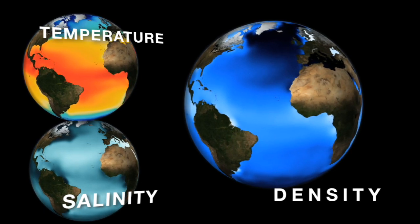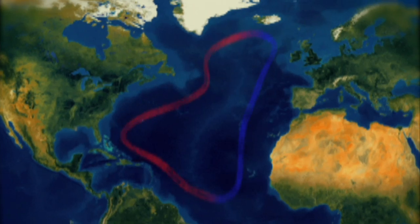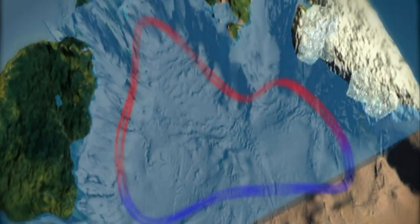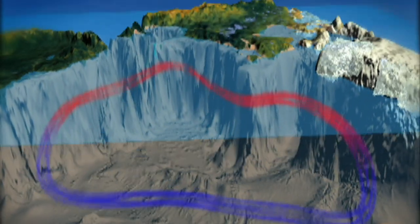Differences in temperature and salt content of the water cause some areas of water to sink and some areas of water to rise. We tend to see the sinking water at the poles and the water rising back up toward the equator. And if you connect the two together, what you have is an overturning that's deep in the ocean.